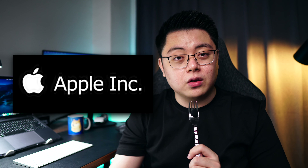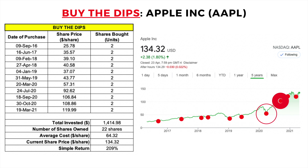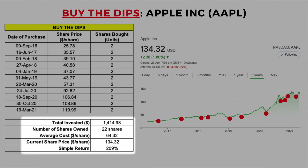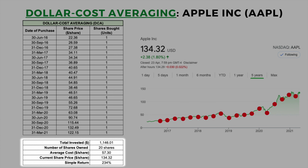So let me show you another piece of data with Apple, using the same testing methodology. I timed the market perfectly and bought all of Apple's dips from 2016 to 2021, ending up with 22 shares at an average cost of $64.30 per share. With Apple trading at around $134 per share, that translates to 209% total return. On the flip side, dollar cost averaging one Apple stock every 3 months yielded 20 shares at an average cost of around $57.30 per share — translating to a total return of 234%, which is actually higher than buying the dips.